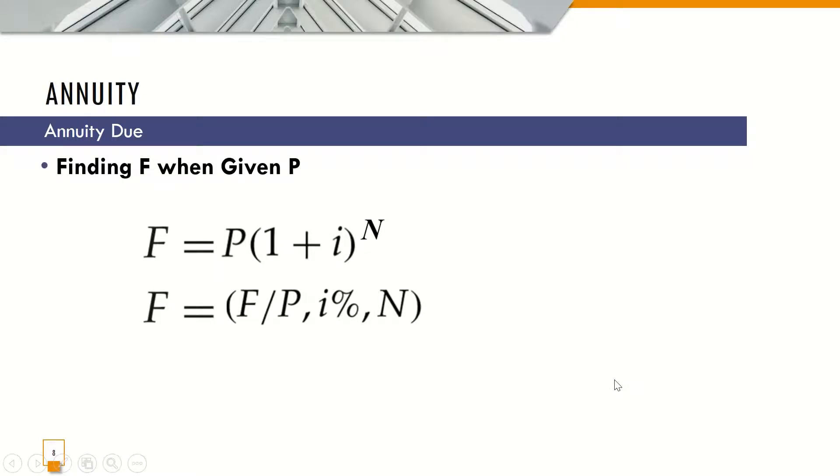And finding F when P is given, using the compound interest formula, F equals P times 1 plus I raised to N.